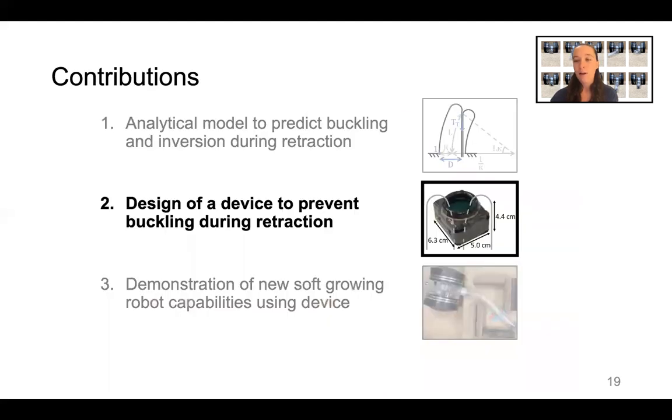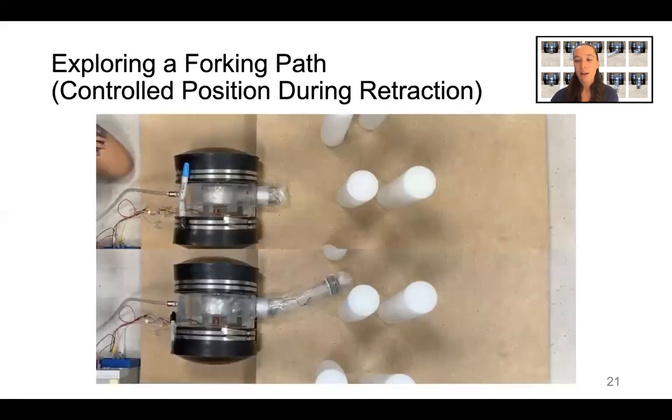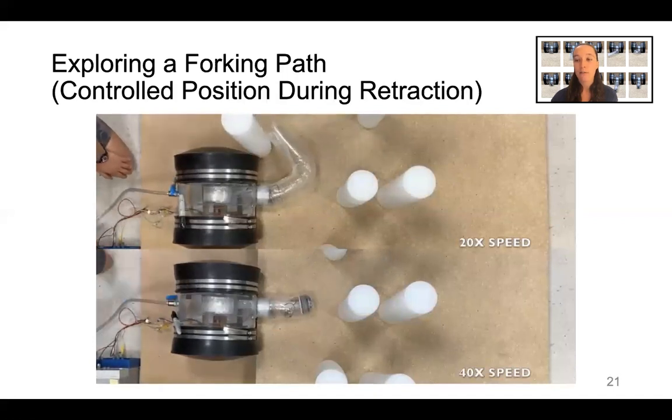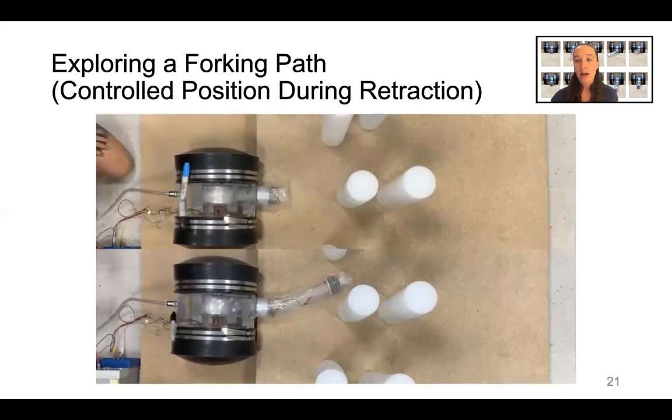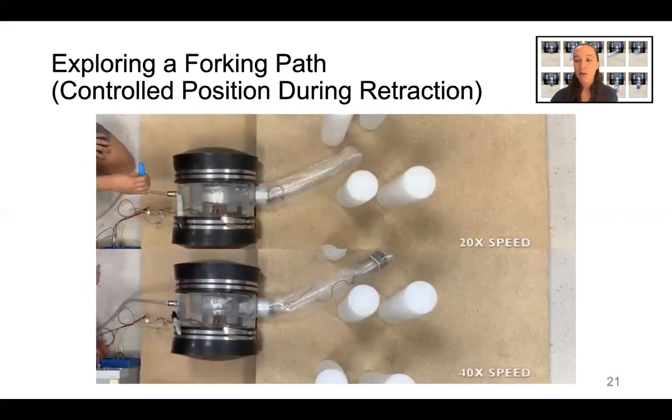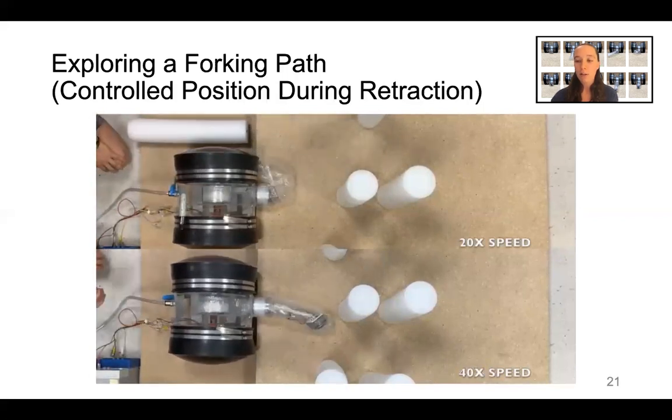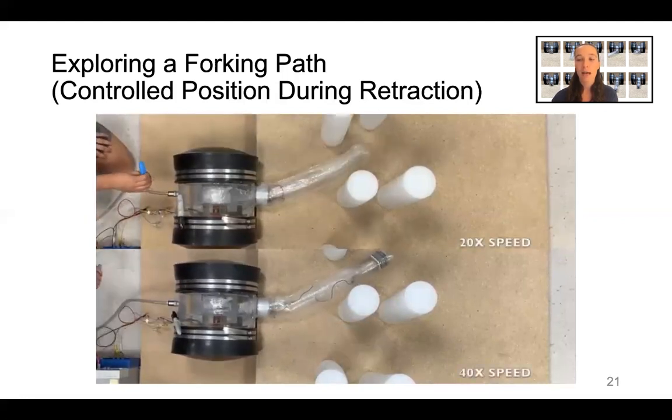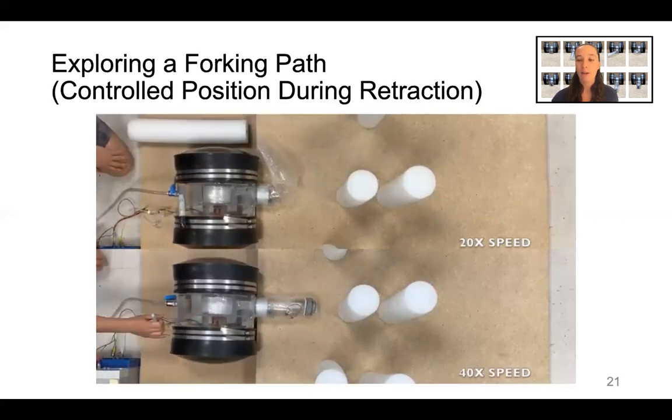Now that I've told you about our retraction device design, I'd like to show you some new soft-growing robot capabilities that we can achieve using this device. This video shows a soft-growing robot navigating an obstacle course where it explores one direction in a forking path and then attempts to retract and explore another direction. On the top, we have a soft-growing robot without a retraction device, and on the bottom, we have a soft-growing robot with a retraction device. The robot on the top is unable to control its position during retraction and ends up knocking over one of the obstacles, but the robot on the bottom is able to retrace its steps and navigate the forking path successfully.